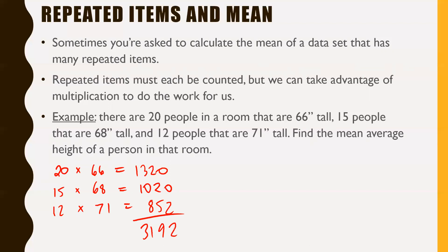Do you think that's our mean? Hopefully not. That is certainly not our mean average height. We have to divide that number by the total number of people in the room. 20 plus 15 plus 12 gives us 47 items in total. So 3,192 divided by 47 gives us 67.9 inches tall. That would be a good representation of the average mean height of a person in that room.